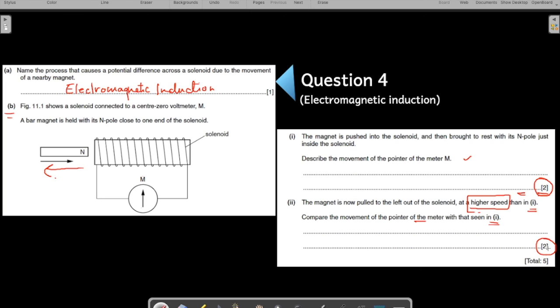Because it's a higher speed, so higher deflection. Greater deflection. Greater deflection means it deflects to a greater extent. Greater angle. Deflection. Right. And opposite. In opposite direction. In opposite direction.